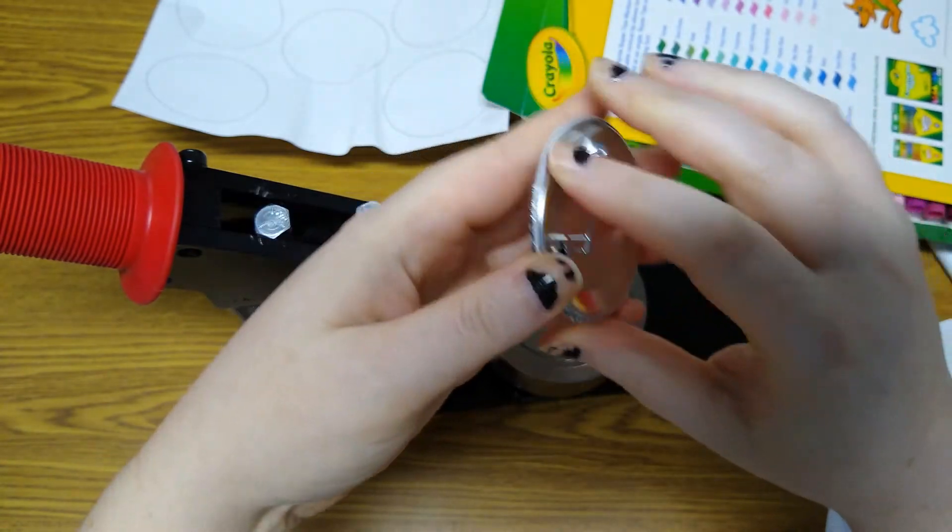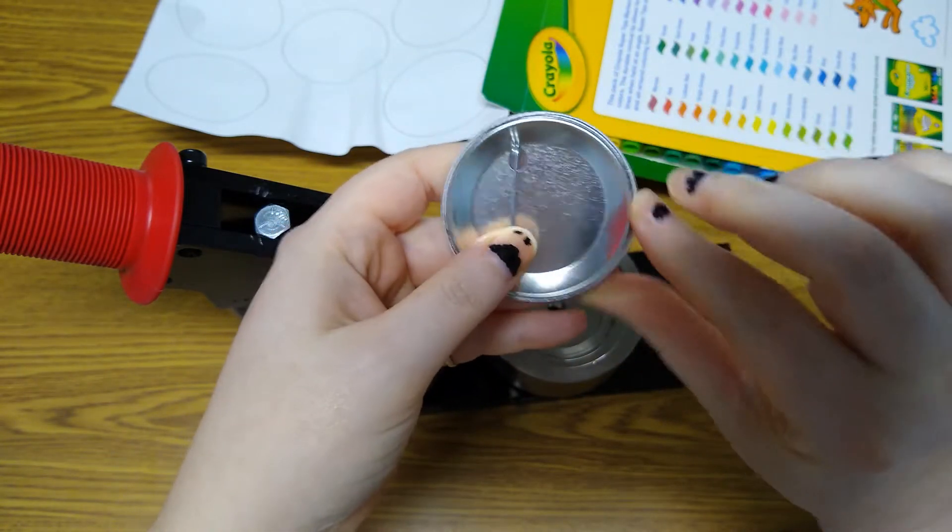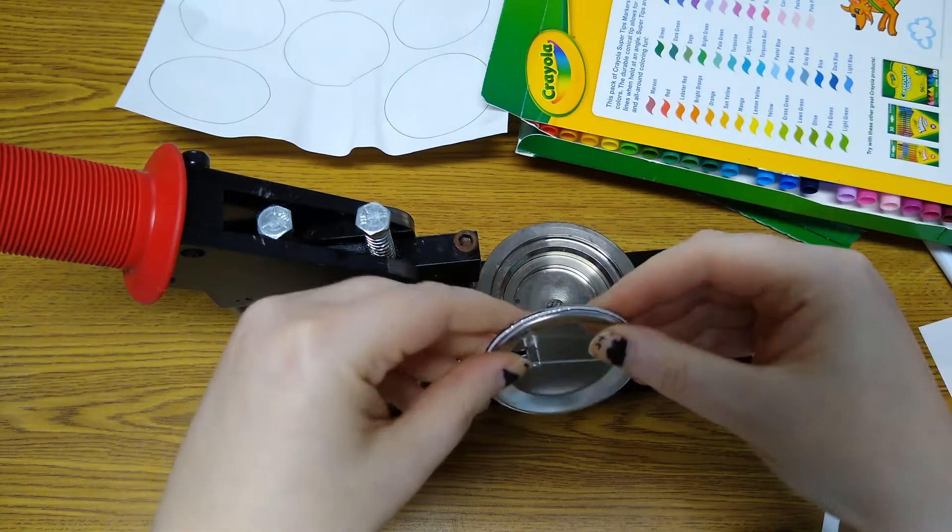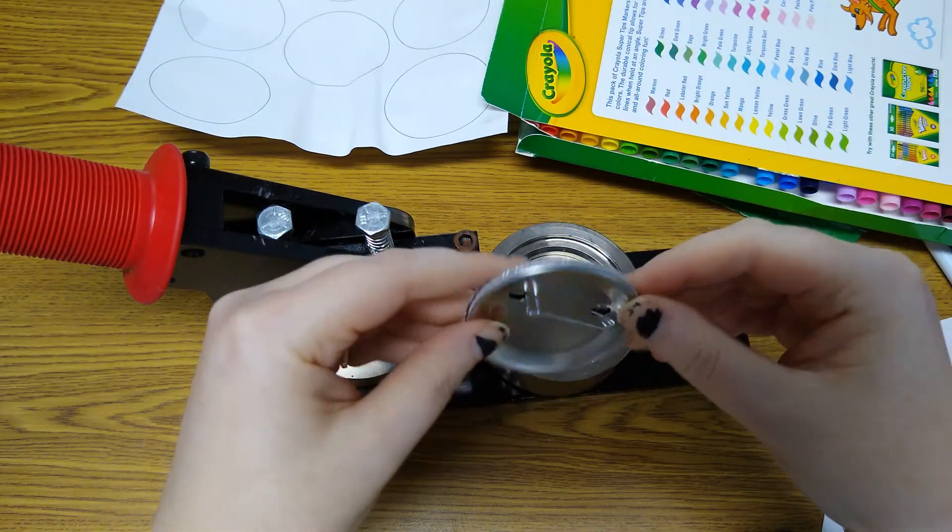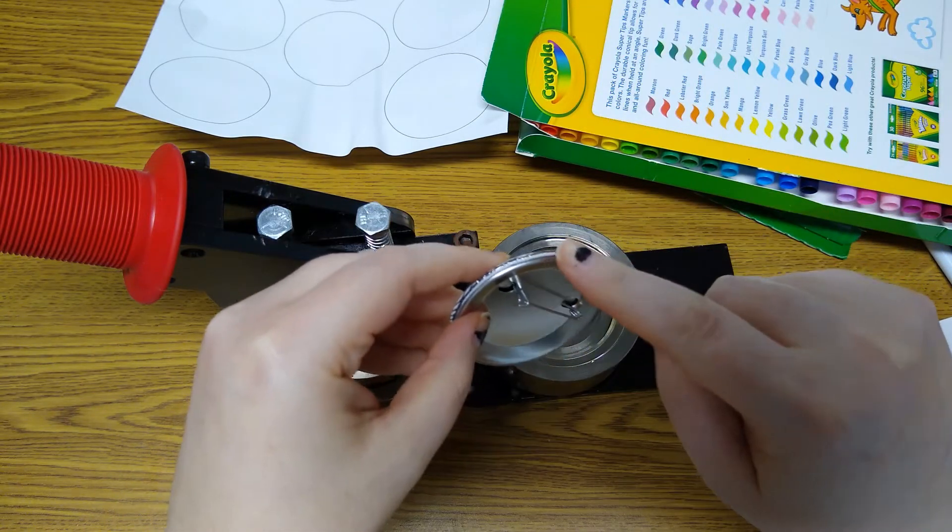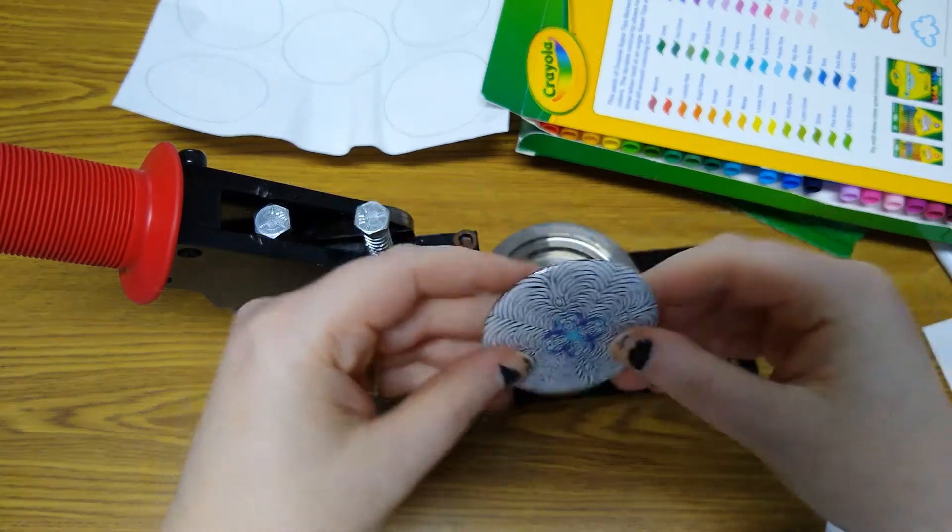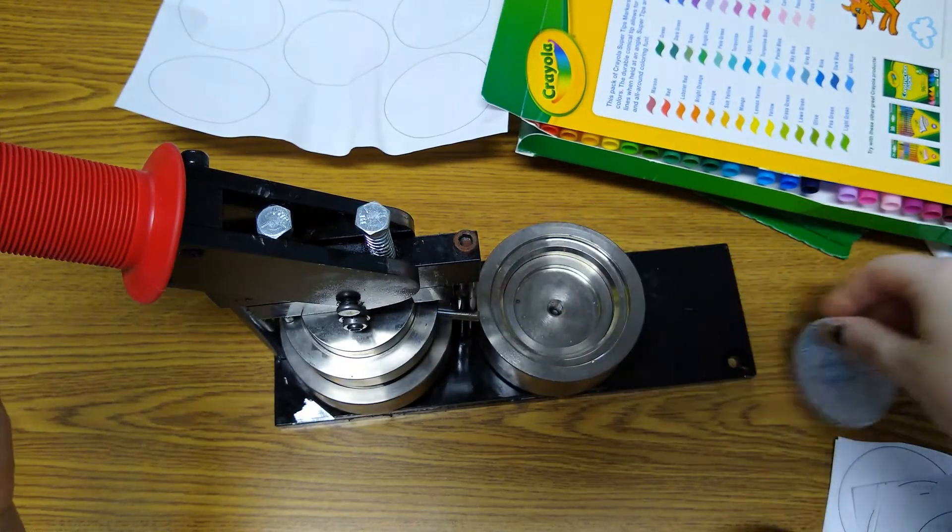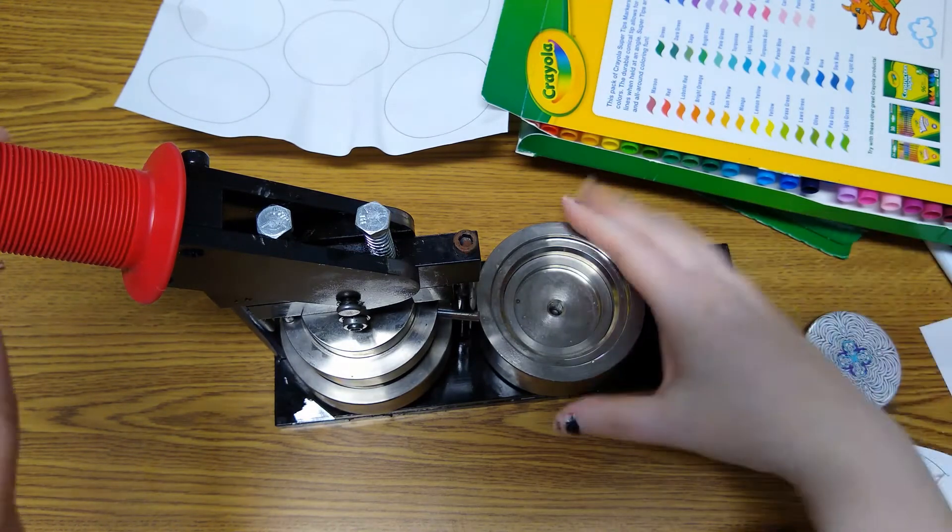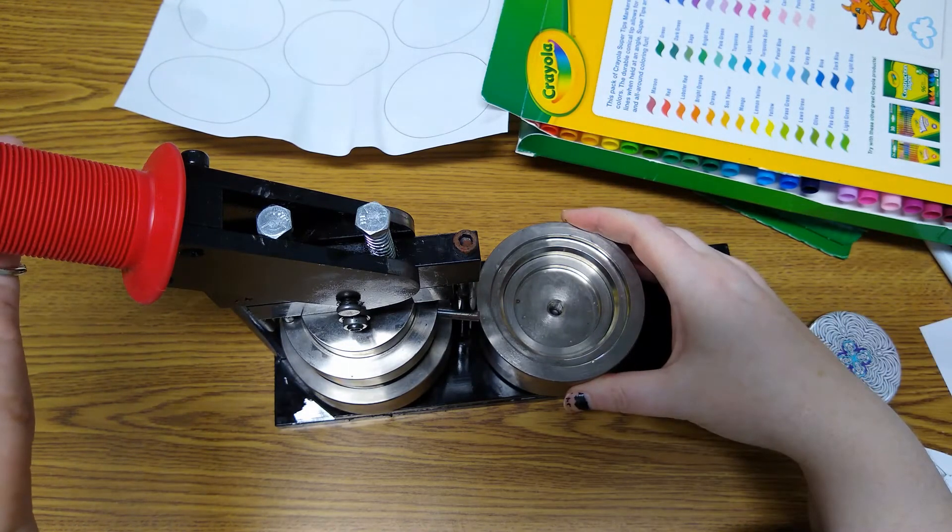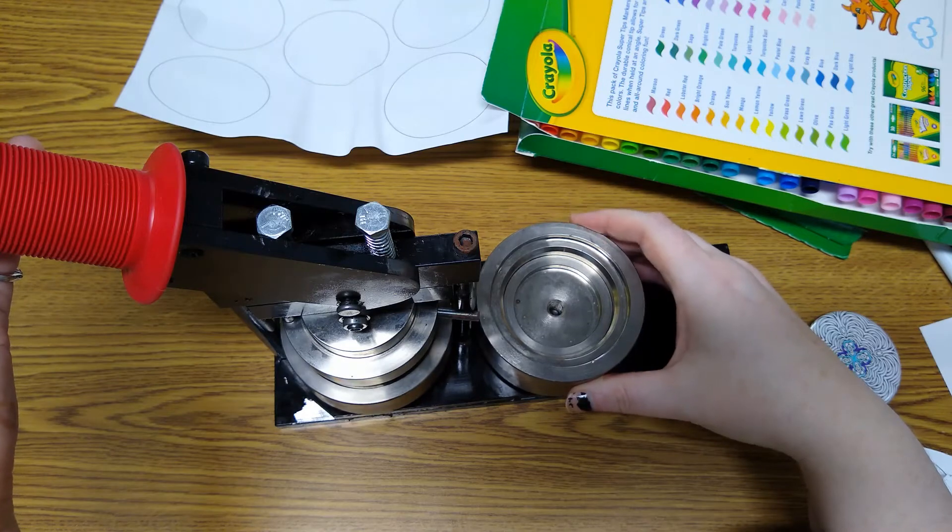Now occasionally the plastic doesn't stamp right. If that happens, you just need to get rid of the pieces because more than likely they will have been bent. And if you use them again it will cause the machine to jam. If the machine does jam, there's quite a few tutorials on YouTube on how to get it unjammed.